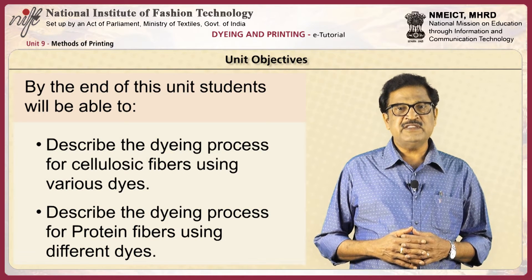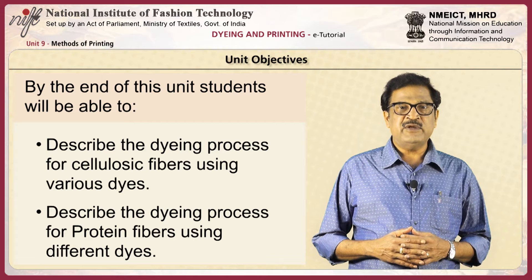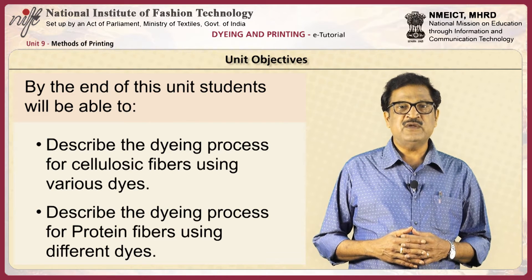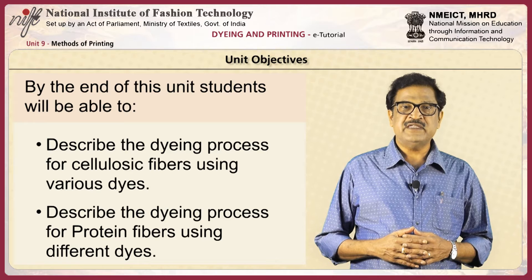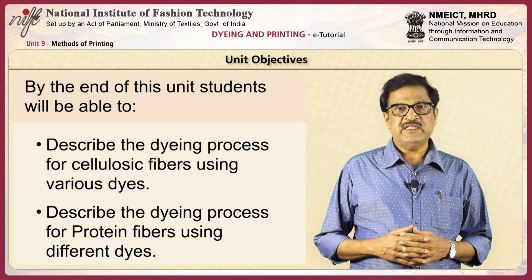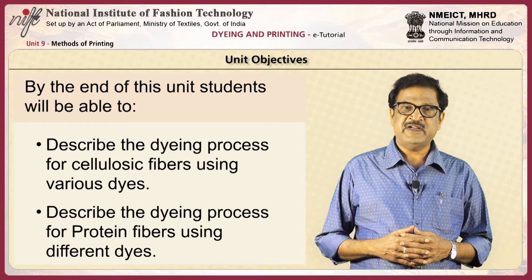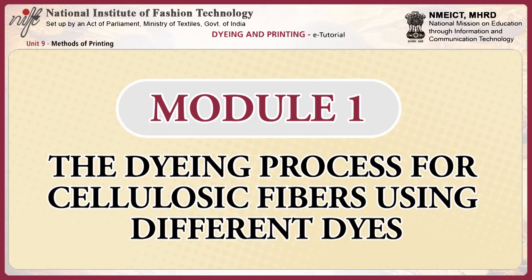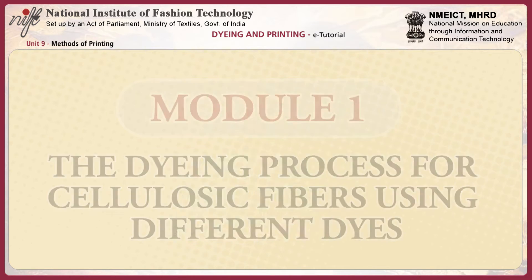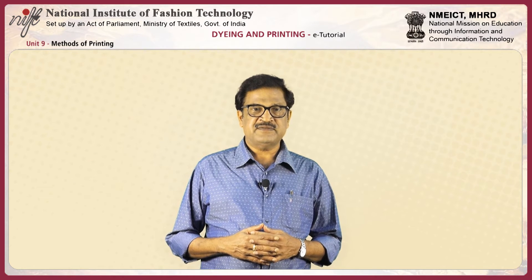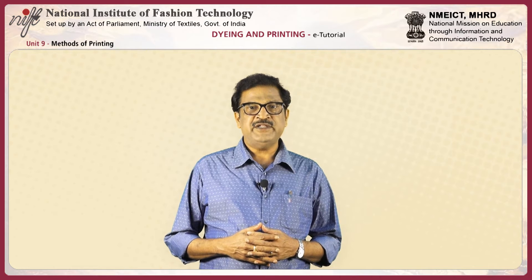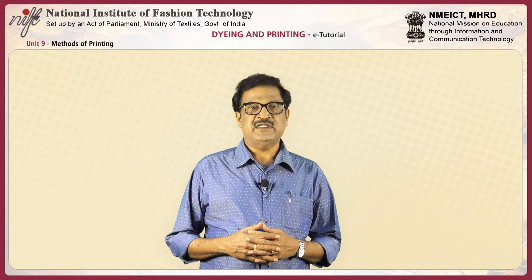By the end of this unit, students will be able to describe the dyeing process for cellulosic fibers using various dyes, and describe the dyeing process for protein fibers using different kinds of dyes. The dyeing process for cellulosic fibers includes the application of direct dyes, which are dyed using the exhaust dyeing method.